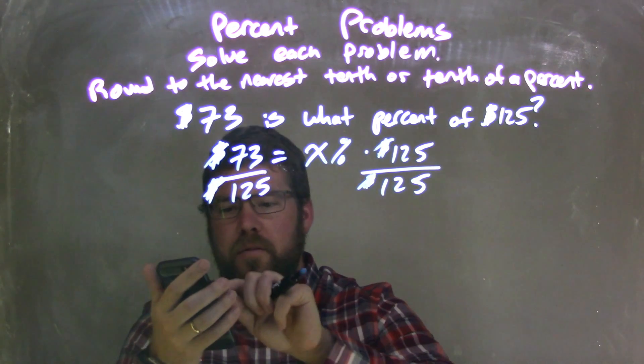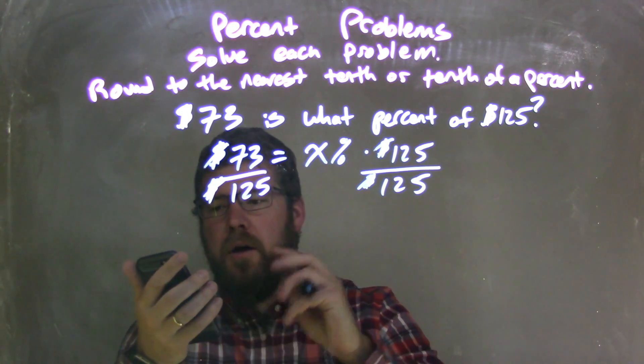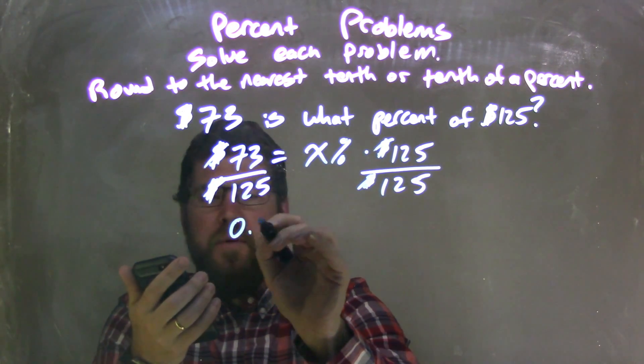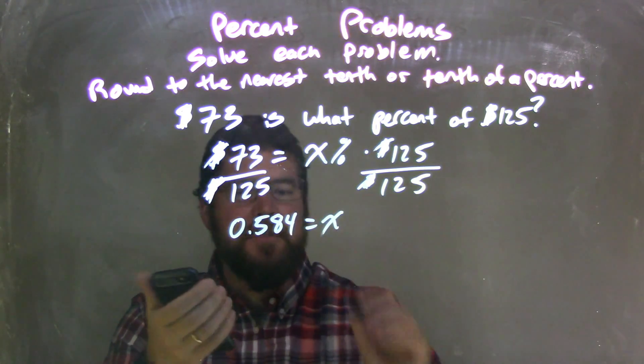$73 divided by 125 is 0.584, and that's equal to x.